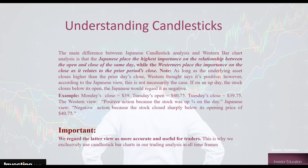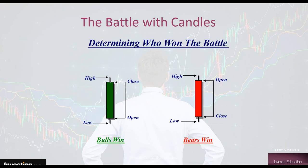The main difference between Japanese candlesticks and Western bar chart analysis is that Japanese place the highest importance on the relationship between the open and the close of the same day, while Westerners place importance on the close as it relates to the prior period's close. So as long as the underlying asset closes higher than the prior day's close, Western thought says it's positive. However, according to Japanese view, if on an up day the stock closes below its open, that is regarded as negative.